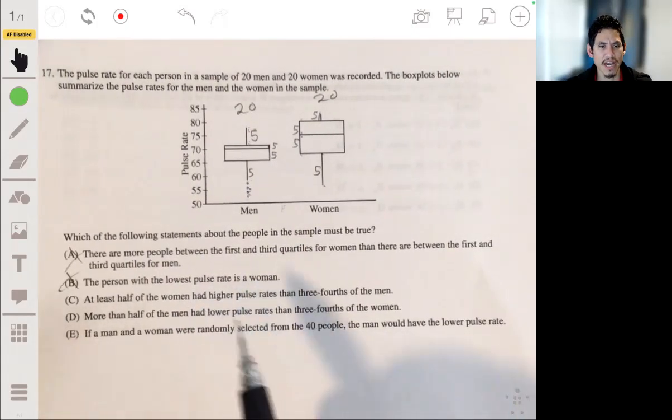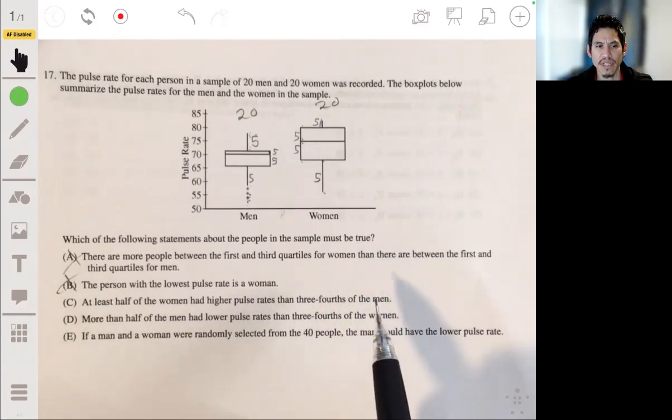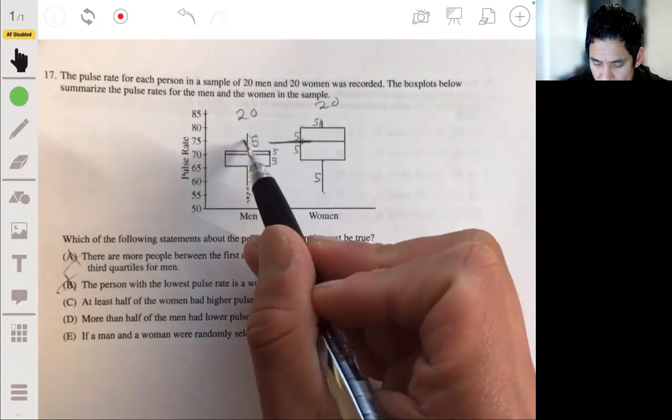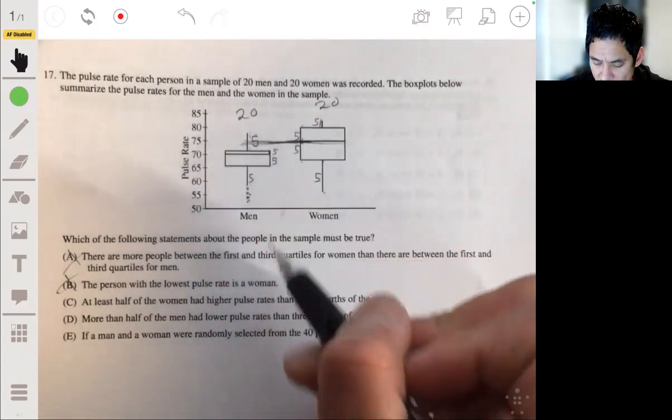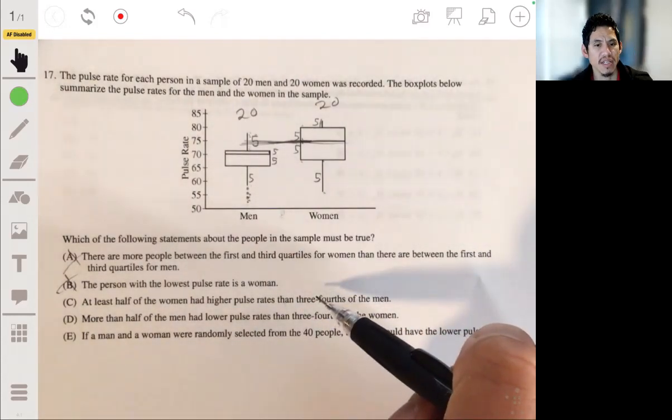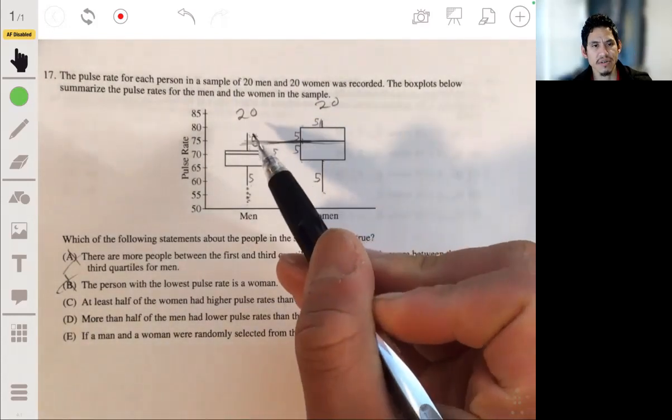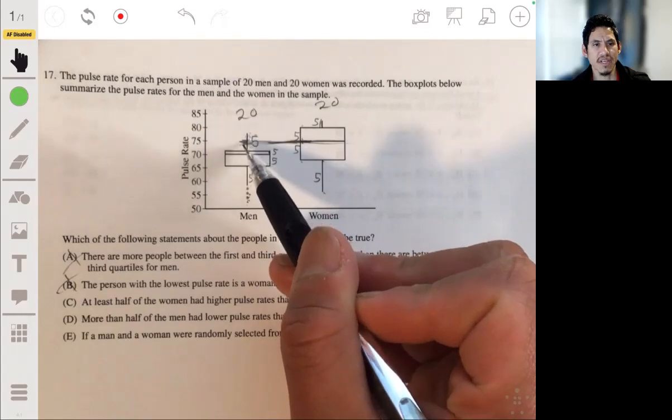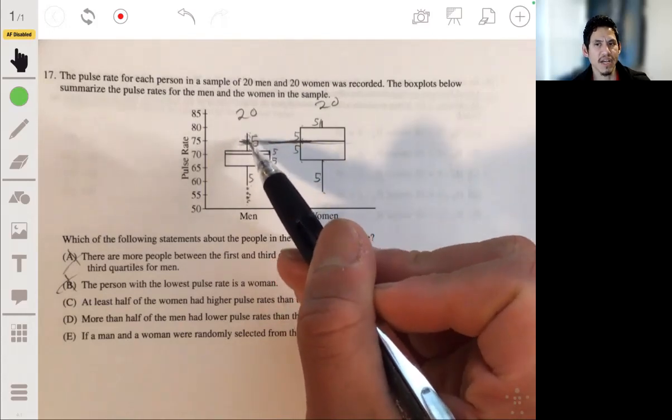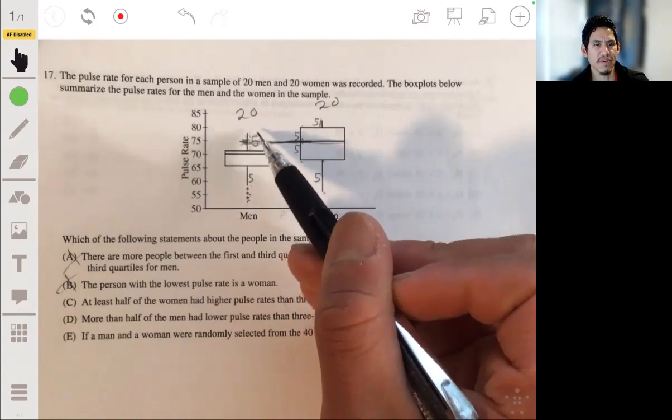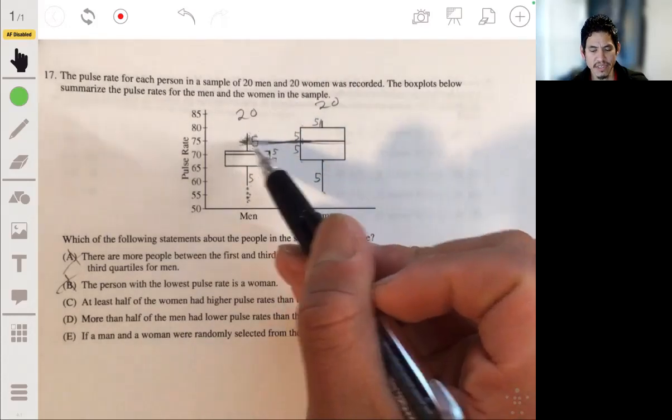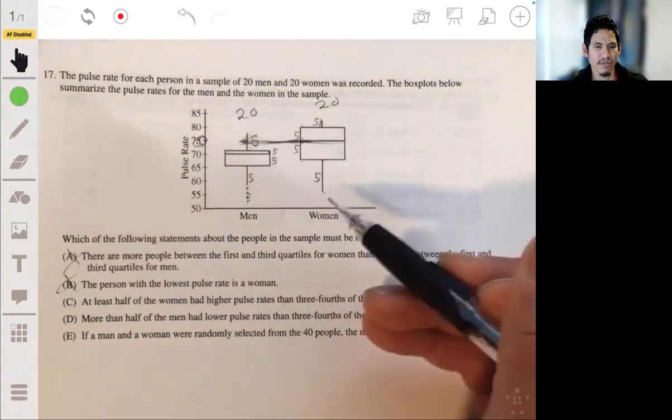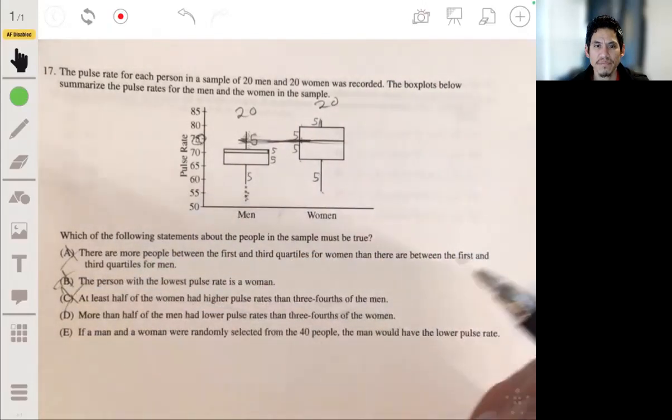C: At least half of the women had higher pulse rates than three-fourths of the men. So half of the women would be here, and so it had more than three-fourths of the men. Like no, because this is only lining up like this last quartile. This is definitely not going to be 75% of the total. This is just, I think it's just very tricky because it makes you think you're not thinking of 75% as the first quartile or three-fourths.